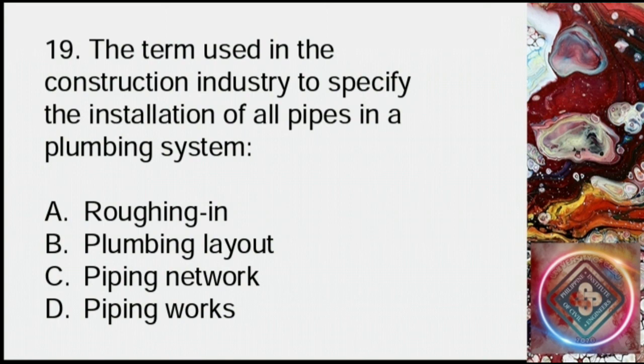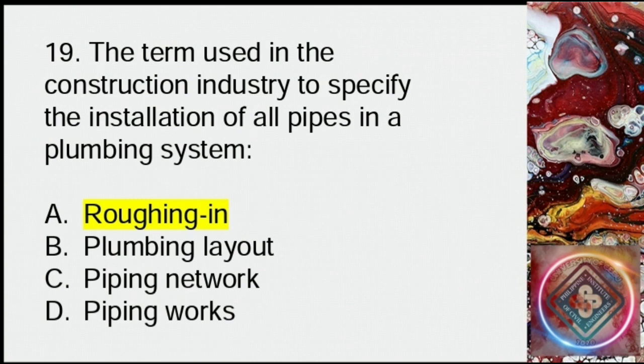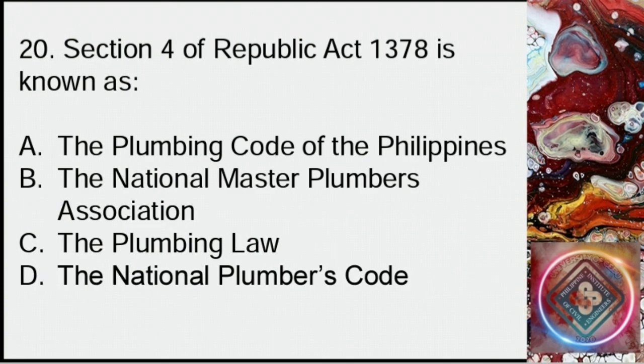Question 19: The term used in the construction industry to specify the installation of all pipes in a plumbing system. A: Roughing in, B: Plumbing layout, C: Piping network, D: Piping works. Answer: A, roughing in.